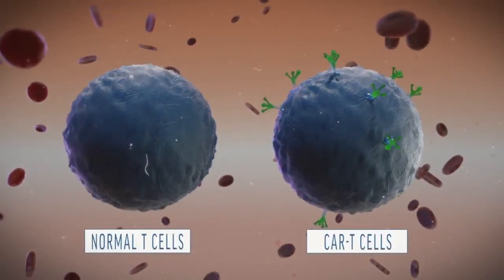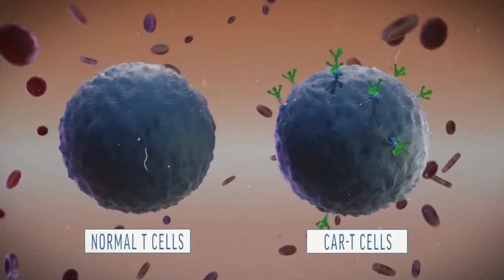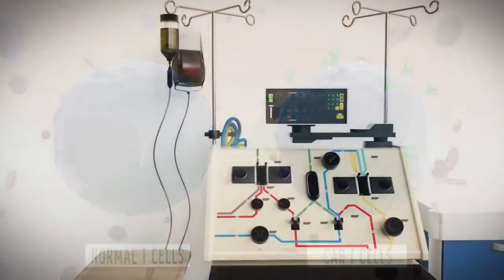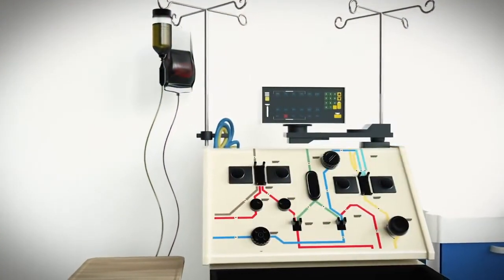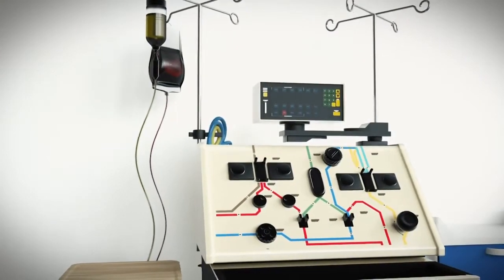T-cells customize to zero in on a patient's specific kind of cancer. It all starts when a patient's blood is filtered through a machine that separates T-cells and other white blood cells from the rest.